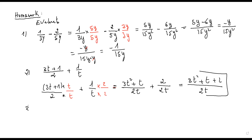Let's do the third one. Two over w plus three, minus five over w minus one.